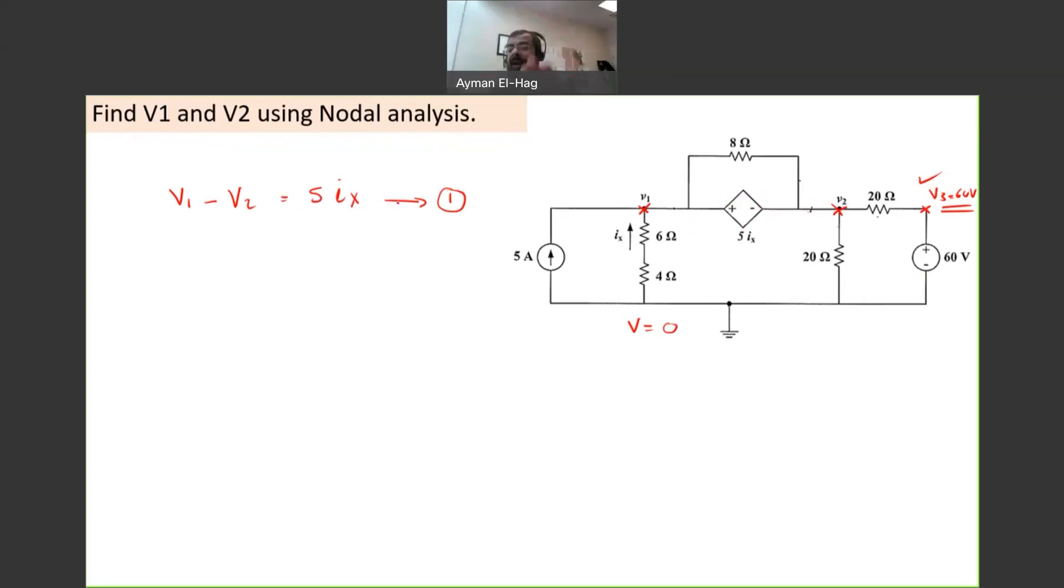Now I am adding another unknown, so now I have three unknowns. I want to get rid of Ix. But what is Ix? Ix is the current that goes from the reference to V1. So Ix basically is 0 volt minus V1 divided by the resistance in between, which is 4 plus 6. So it's equal to minus V1 divided by 10, and this is number 2.